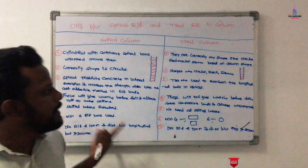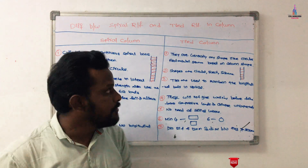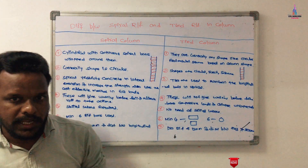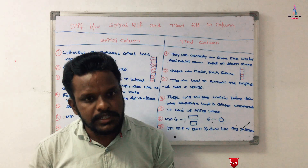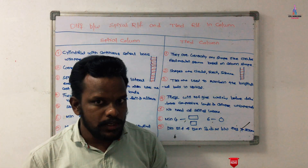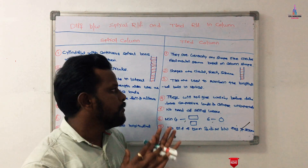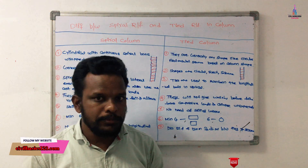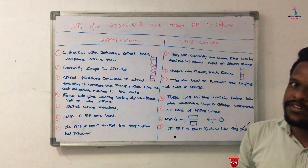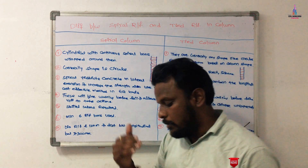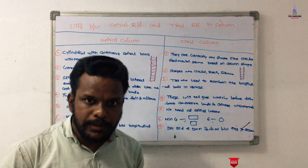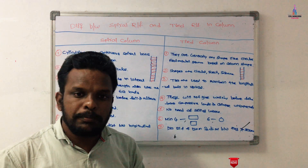These are the basic differences between tie reinforcement and spiral reinforcement, consisting of seven major differences. Columns are vertical members used to transfer loads from the beam sections to the foundation section. They act as intermediate members used to transfer loads.